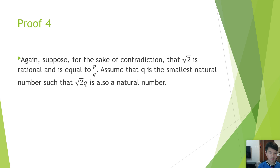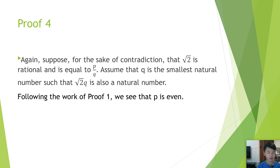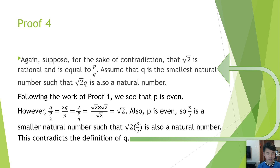Proof 4. Again, suppose for the sake of contradiction that the square root of 2 is rational and is equal to p over q. Assume that q is the smallest natural number such that the square root of 2 times q is also a natural number. Following the work of Proof 1, we see that p is even. However, q divided by p over 2 is the square root of 2. Also, p is even, so p over 2 is a smaller natural number such that the square root of 2 times p over 2 is also a natural number. This contradicts the definition of q.